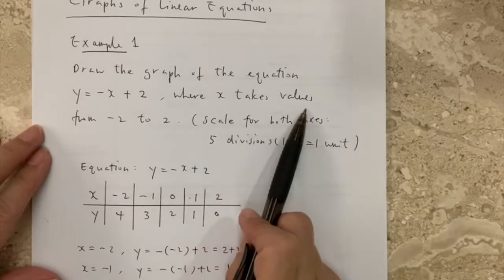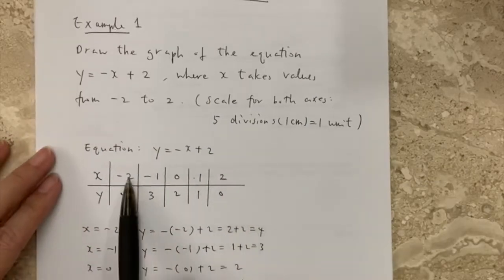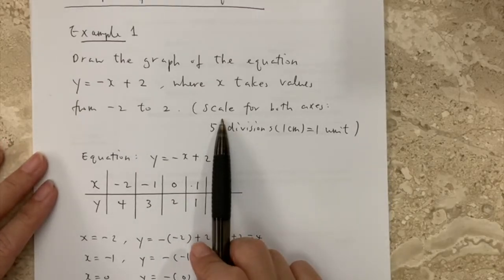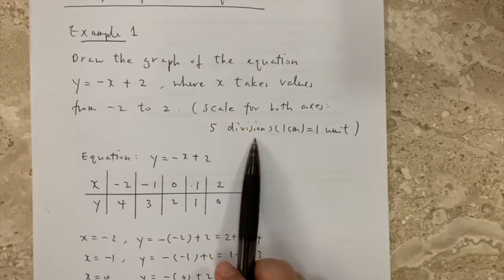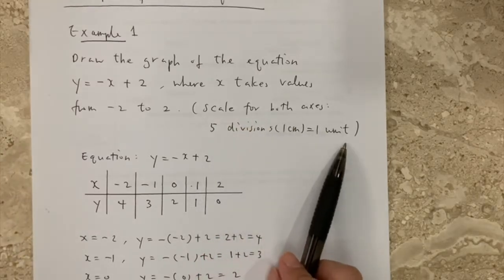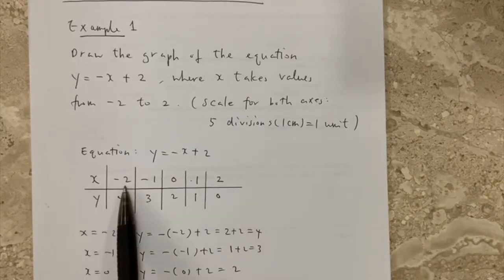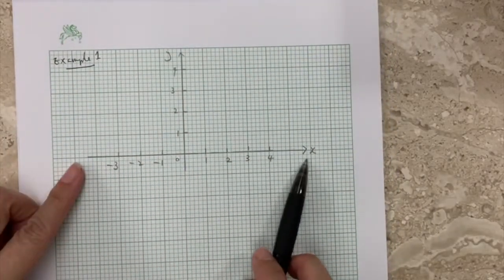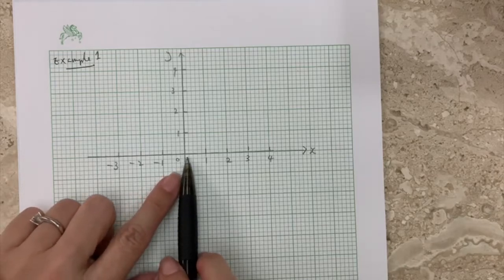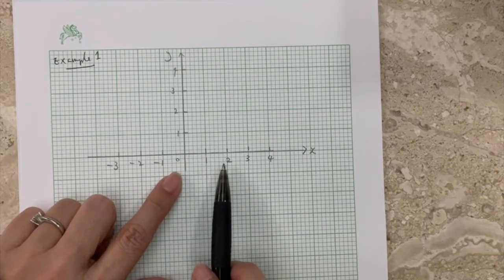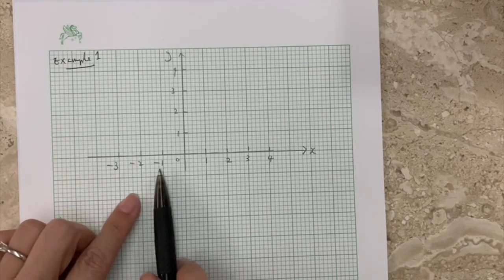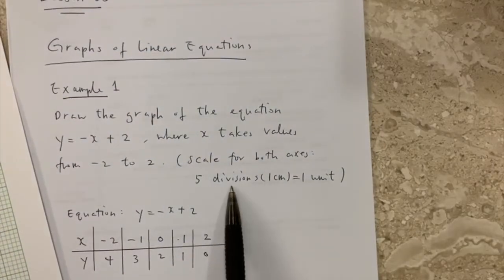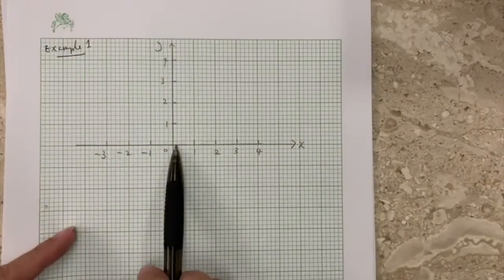This is the meaning of where x takes values from minus 2 to 2. After getting all the coordinates, now I can draw the graph. The scale given for both axes is 5 divisions equals 1 unit. The x-axis is horizontal — going right is positive: 1, 2, 3, 4; going left is negative: minus 1, minus 2, minus 3. So 5 divisions equals 1 unit.